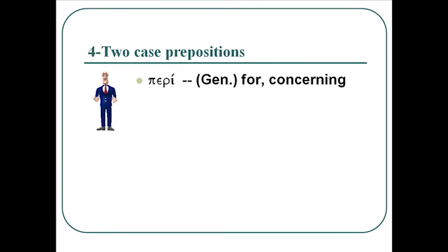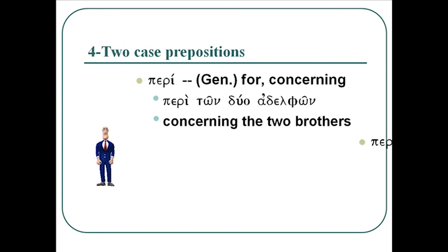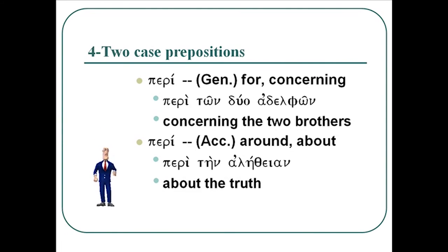μετά with the accusative means after, so we have μεθ' ἡμέρας ἕξ — 'after six days'; ἕξ means six, like hexagon. Notice the μεθ': the alpha dropped from μετά and because of the rough-breathing initial vowel, the tau compensated to theta. Our fourth two-case preposition is περί (peri). With the genitive it means for or concerning; an example is περὶ τῶν δύο ἀδελφῶν — 'concerning the two brothers.' With the accusative, περί means around or about, like 'perimeter.' An example is περὶ τὴν ἀλήθειαν — 'about the truth.'